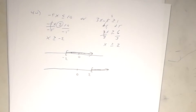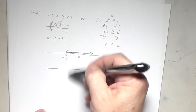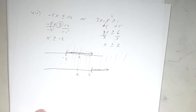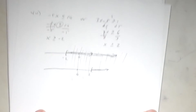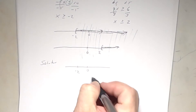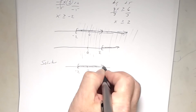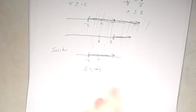This is an 'or' statement, so look for union — anything shaded is a solution. Looking at both graphs together, everything from negative two all the way to infinity is being shaded. Final graph: bracket at negative two going right. Interval notation: bracket negative two, comma infinity, parenthesis. That was number 40.